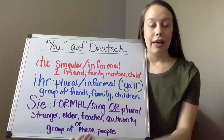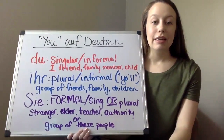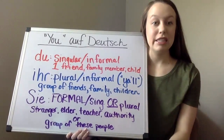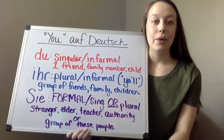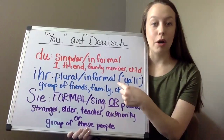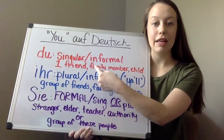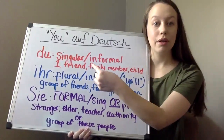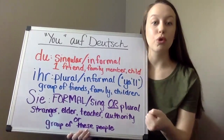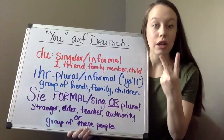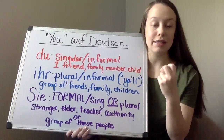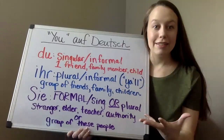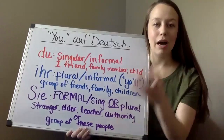The next one is 'ihr,' and 'ihr' is especially simple — I feel like for us southerners — because it basically means 'y'all.' It's the same idea that it's informal: friends, family, and children. However, it's plural, so that means it has to be a group — at least two or more. So two friends, two family members, a group of kids that you're telling to stop running, probably.